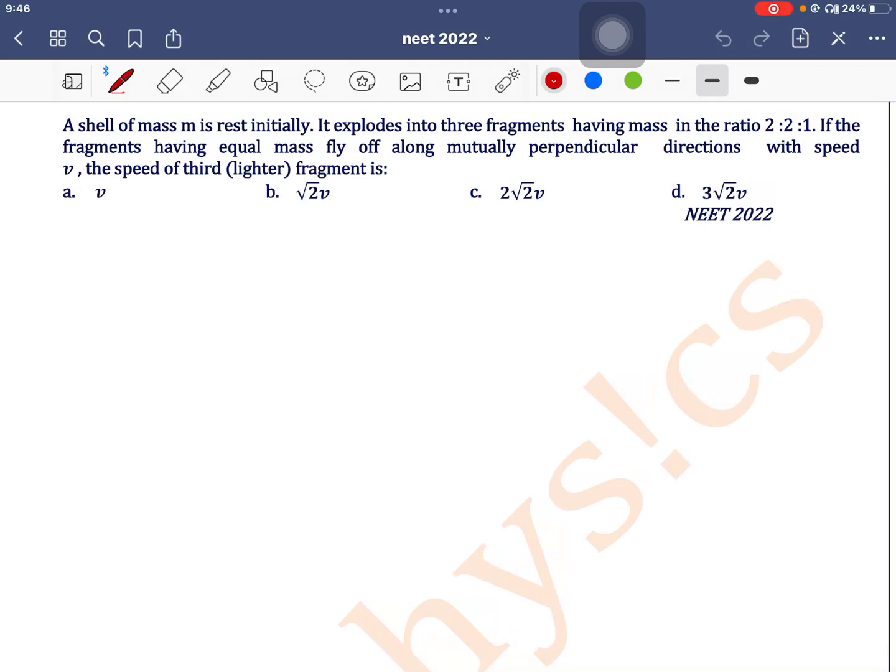A shell of mass m is at rest initially. It explodes into three fragments having mass in the ratio 2 to 2 to 1. If the fragments having equal mass fly off along mutually perpendicular directions with speed v, the speed of the third fragment is...